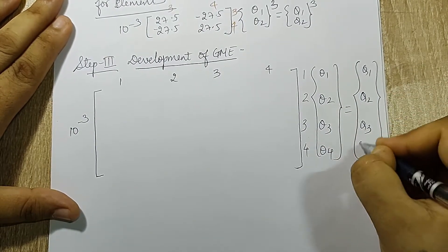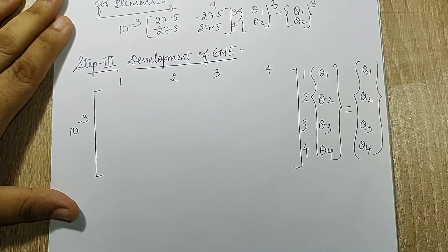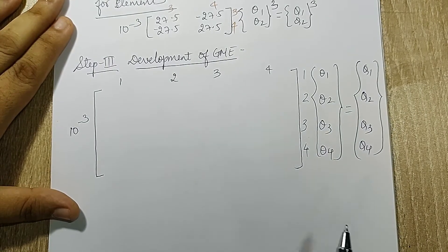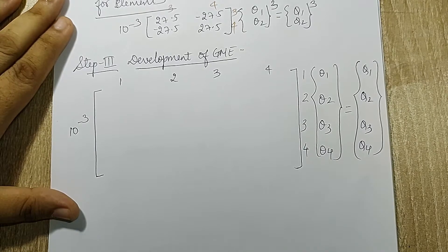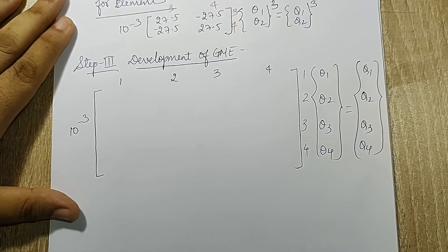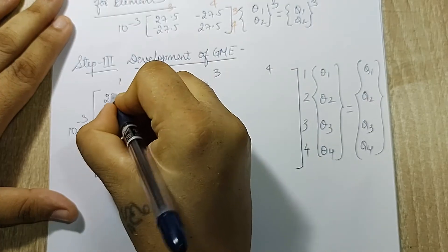While solving this question be careful. Here I am using a Greek alphabet theta and here I am using an English alphabet q. Sometimes students tend to just interchange these terms. Now I'll be substituting the value. Element 1 is between node 1-2, the number is 27.5.